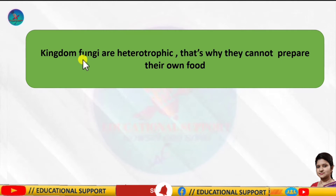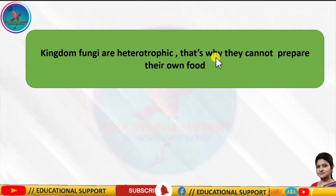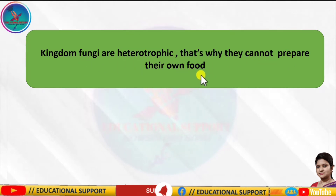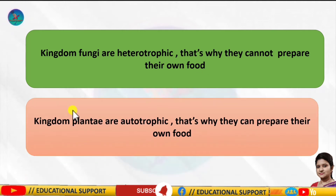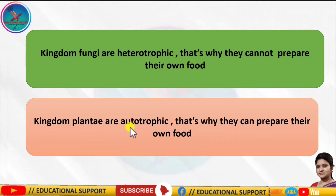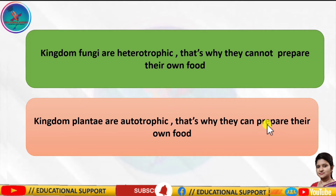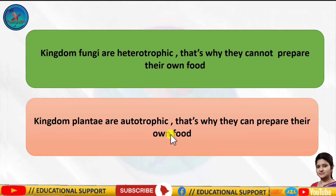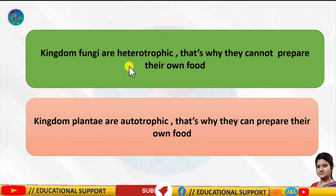The next difference is that kingdom fungi are heterotrophic, that is why they cannot prepare their own food, but kingdom plantae are autotrophic, that is why they can prepare their own food. You can recall what autotrophic and heterotrophic mean.